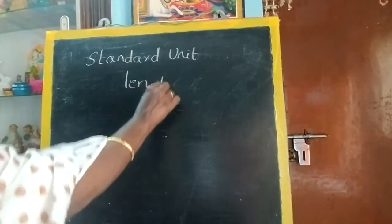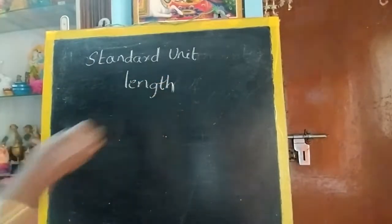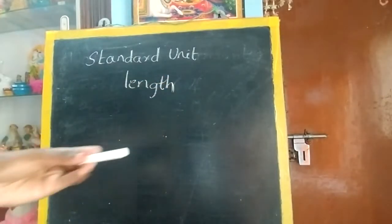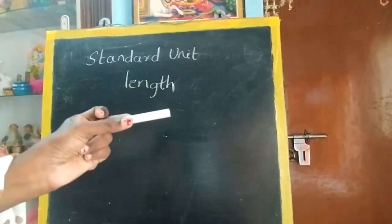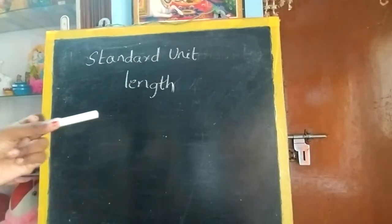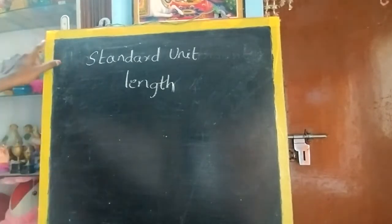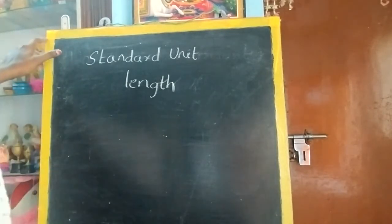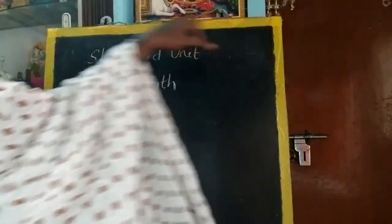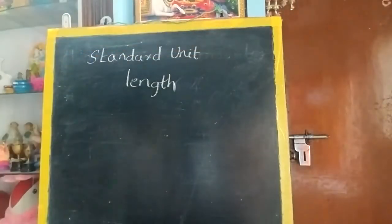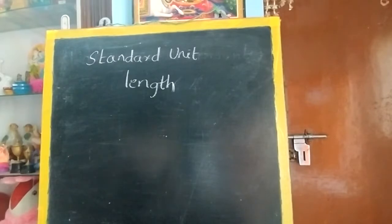What is meant by length? Even this chalk piece is having a length. Even my dress is having a length. Even this board, measuring from here to here, it is called length. Even the mobile phone is having length — your pencil, eraser. So everything is having a length.